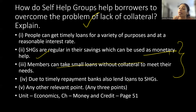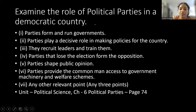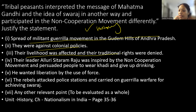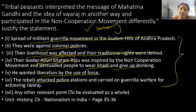The next three-mark question: Tribal peasants interpreted the message of Mahatma Gandhi and the idea of Swaraj differently and participated in the Non-Cooperation Movement in their own way. This is a history question from Nationalism in India. Key points: spread of militant guerrilla movement in Gudem Hills; they were against colonial policies; their livelihood was affected and traditional rights were denied. You also need to write about Alluri Sitaram Raju — he wore khadi, gave up drinking, wanted liberation by use of force, attacked police stations, and carried on guerrilla warfare for Swaraj. All these points need to be covered.